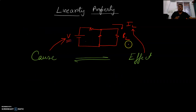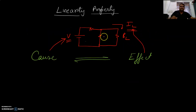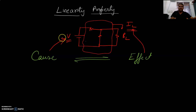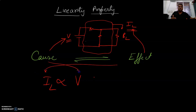There is a cause with the voltage and the effect of the current, and in between there is an element. Whatever the cause, it is directly affecting the load current. How is it related? If IL is proportional to V, the effect is proportional to the cause. That is what we are going to see — whether this network is a linear circuit or not.